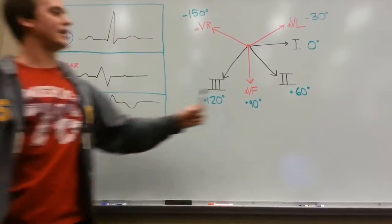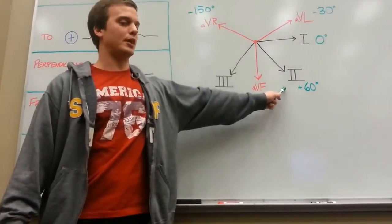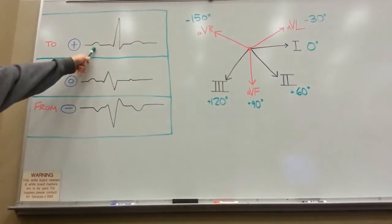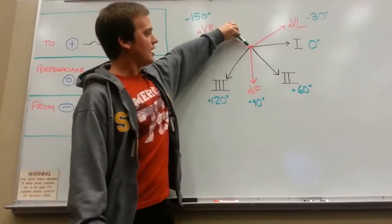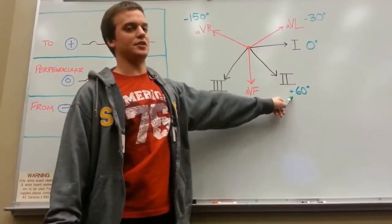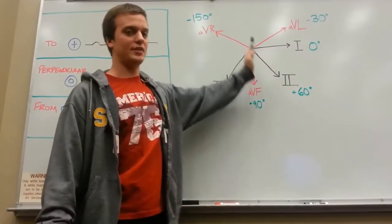So, for example, if lead number two, your bipolar lead, is positive, you'll know that your mean electrical axis will be traveling close to positive 60 degrees, or at least somewhat parallel in that direction.